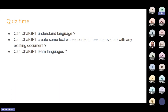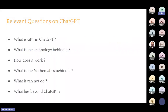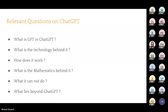Feel free to stop me anytime because this covers a very wide topic. Some relevant questions: What is GPT in ChatGPT? Have you thought about it? What is the technology behind it and how does it work? If you type a question and answers come out, how is that really happening? What is the mathematics behind it? What are the things it cannot do — can it answer all questions? What lies beyond ChatGPT? Is ChatGPT a big success from the machine learning point of view?